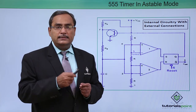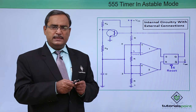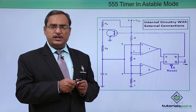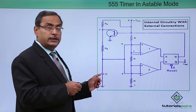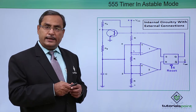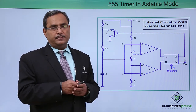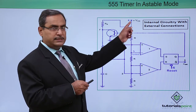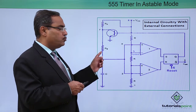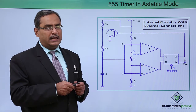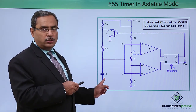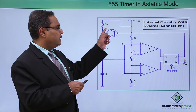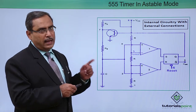A relaxation oscillator is one whose oscillation frequency depends upon the capacitor's charging and discharging time. Here, the capacitor's charging and discharging time decides the oscillation frequency of the astable multivibrator. The capacitor charges through VCC via resistors RA and RB in series, so the charging path involves RA plus RB.